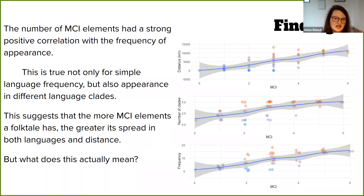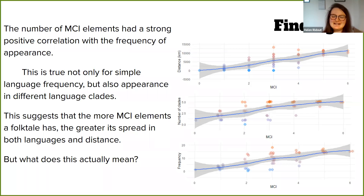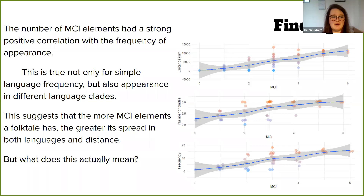I will introduce a small limitation here. I was the one selecting what MCI elements were, and while I made many attempts to remain objective, what may be counterintuitive to me — like death looking for someone — may not be counterintuitive to somebody else. I did make all possible attempts to remain objective. I consulted various people in the field, including Nora Zion and somebody called Upal, a psychologist with the US Department of Defense, which was quite surreal. He gave me a table of what he considered MCI elements, which was very useful.